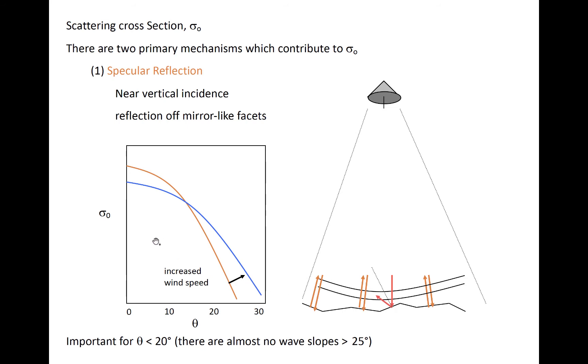The plot on the left shows us how sigma nought varies as a function of incidence angle and wind speed. So the different wind speeds are noted by the two lines and the incidence angles on the x-axis. The orange line is some unspecified wind speed, and the blue line indicates a new sigma nought after increasing the wind speed some arbitrary amount. In the specular reflection regime, the backscatter cross-section tends to decrease as the wind increases for small values of the angle of incidence.